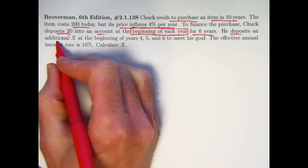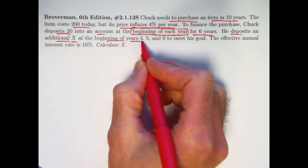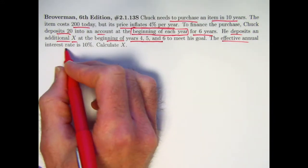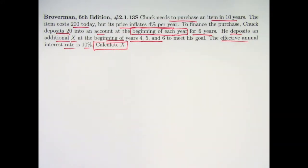He deposits an additional x at the beginning of years 4, 5, and 6 to meet his goal. The effective annual interest rate is 10%. Calculate x. How much should he deposit at the beginning of years 4, 5, and 6?